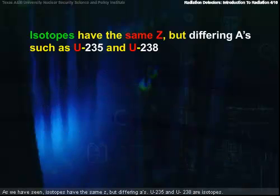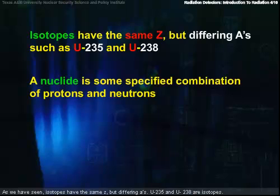As we've seen, isotopes have the same Z but differing A's. U-235 and U-238 are isotopes. A nuclide is some specified combination of protons and neutrons.